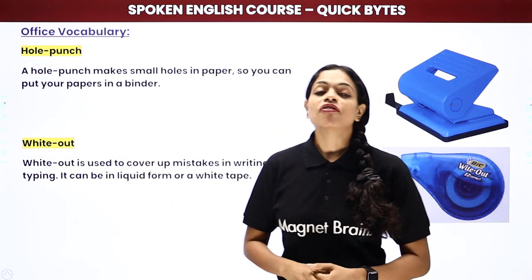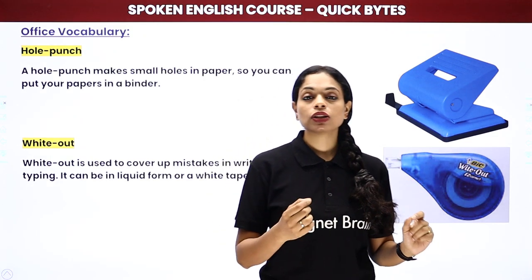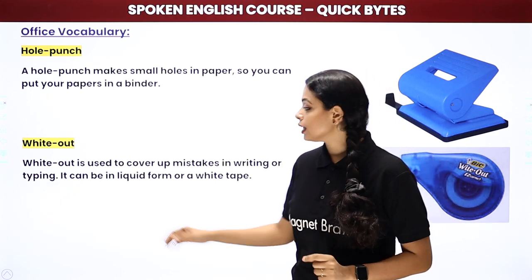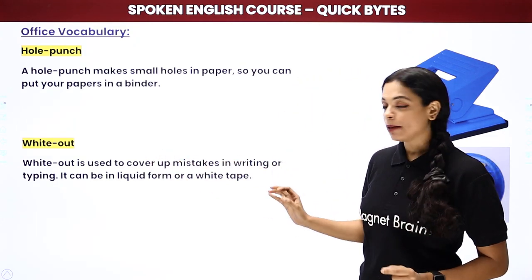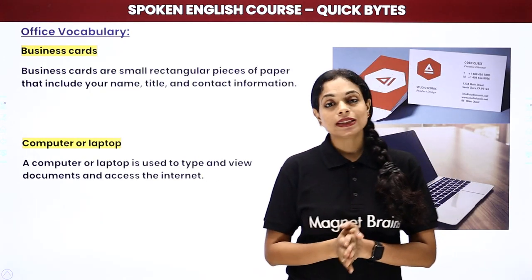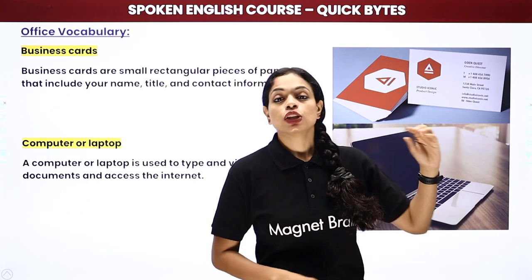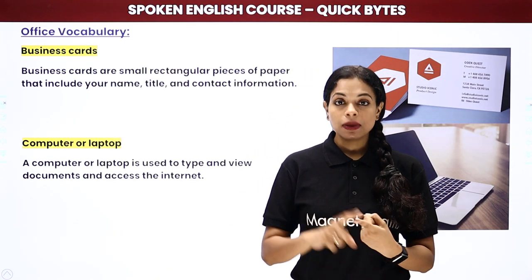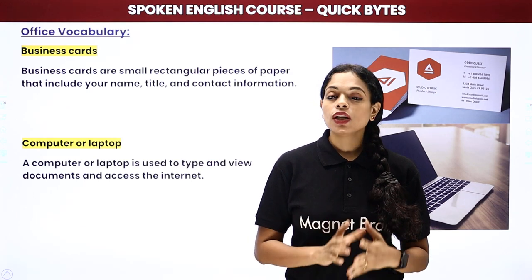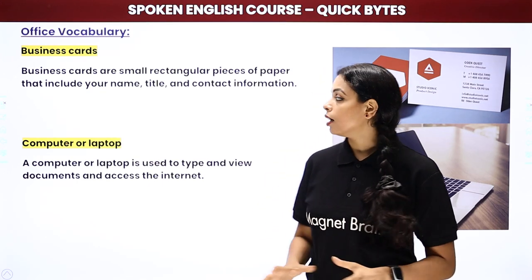Next we have a whiteout. Whiteout is usually a pen or a liquid tool. It has white liquid inside — so if you have written something wrong and want to erase it, you use whiteout. It covers up a mistake in writing or typing. It can be in liquid form or a white tape. Then you have business cards. Business cards beautifully mention your profession — your name, designation, your company name, logo, email ID, and phone number. All this information is on your business card.